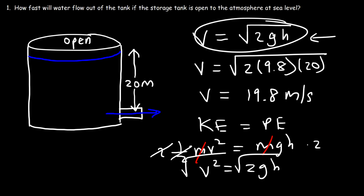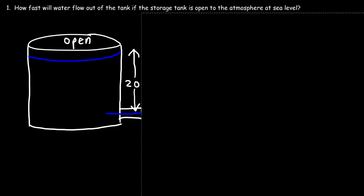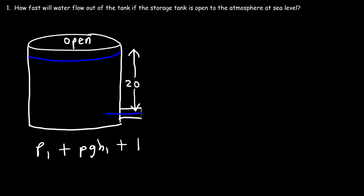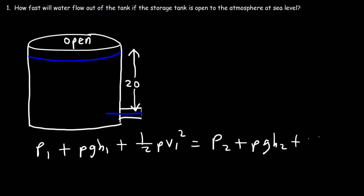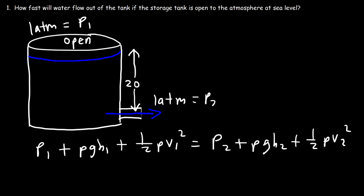The other technique is using Bernoulli's equation: p1 plus ρgh1 plus 1/2 ρv1² equals p2 plus ρgh2 plus 1/2 ρv2². When the water leaves the tank, it's exposed to the atmosphere at about 1 atm. And at the top, it's also exposed to the atmosphere at 1 atm. So p1 and p2 in this problem are approximately the same.